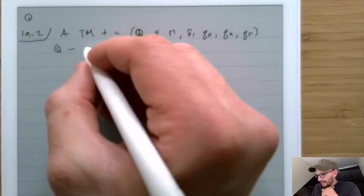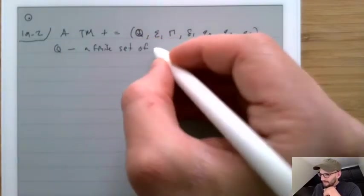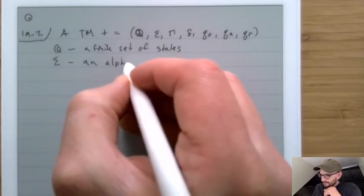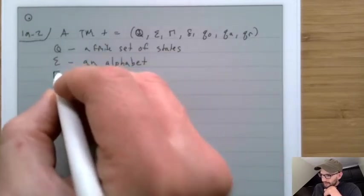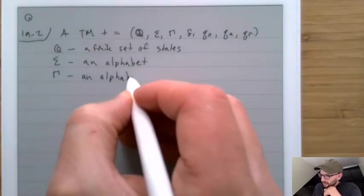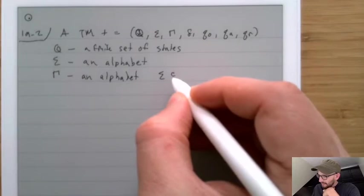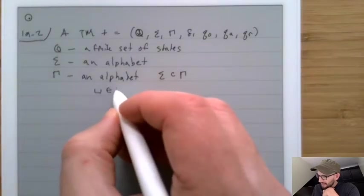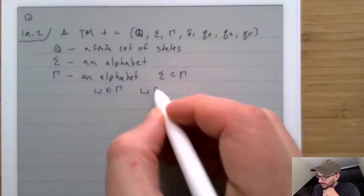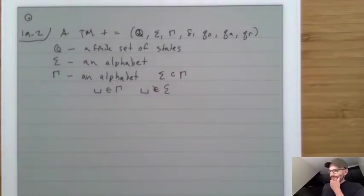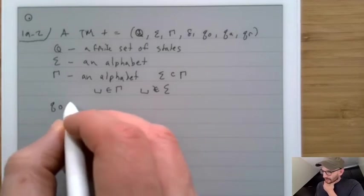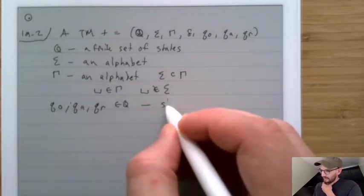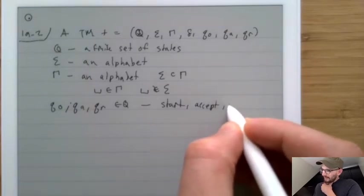Q is a finite set of states. Sigma is an alphabet, Gamma is an alphabet, and there's a constraint: Sigma has to be a subset of Gamma, blank has to be in Gamma, but blank may not be inside of Sigma. Q0, qA, and qR are all inside of Q, and they are respectively the start, accept, and reject states.